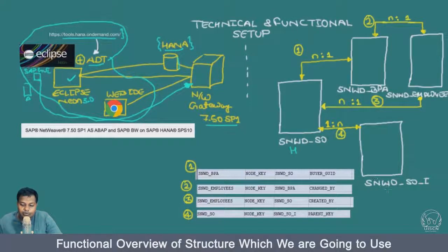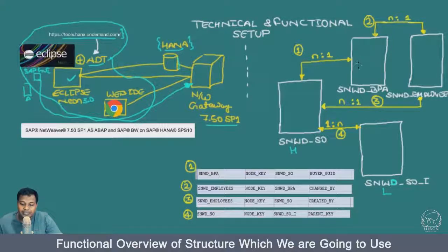We have SNWD underscore SO underscore I, which is the line item for sales order. Then we have SNWD underscore BPA, which is the business partner data. And we also have SNWD underscore EMPLOYEES — there is an S which you cannot see but it is there. So this is your employees data, and all the employees data will be there.